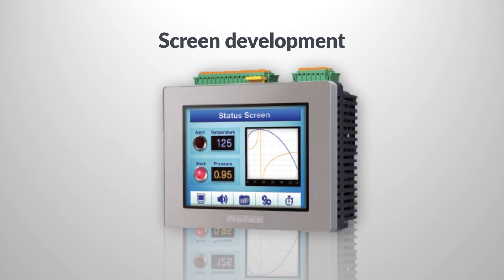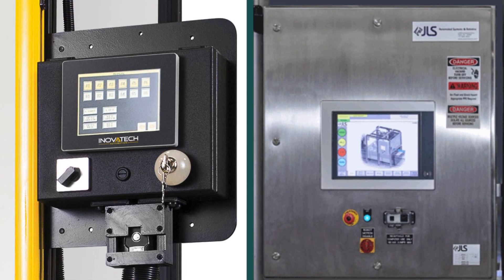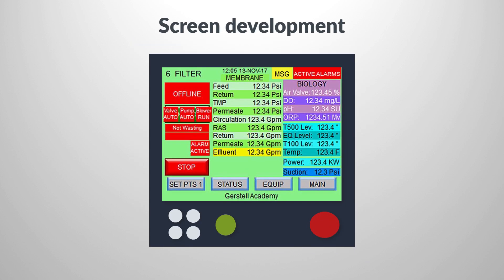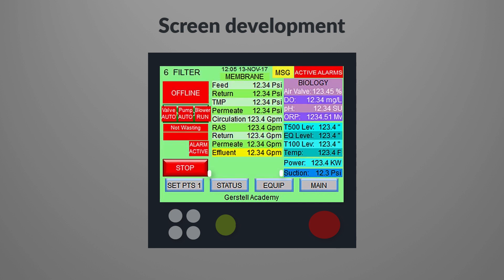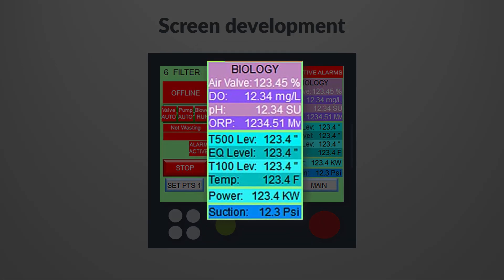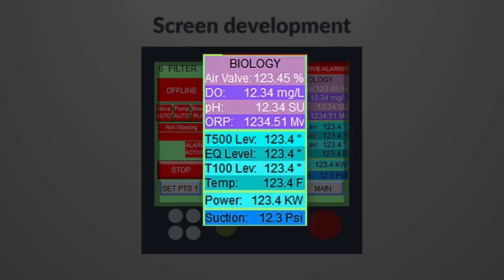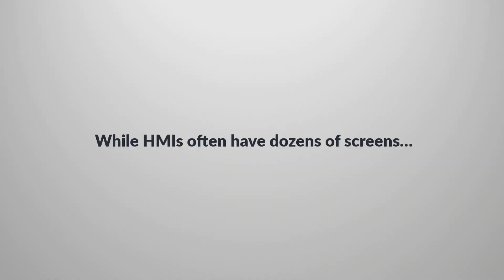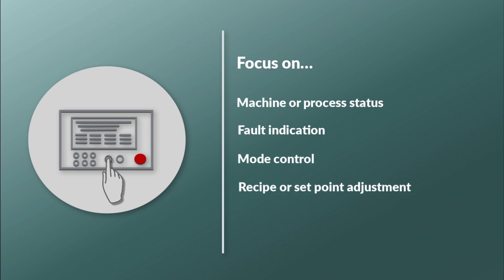When it comes to developing graphics screens, there are many basic HMI design techniques that should be followed. But an operator interface is more than just a pretty picture — that pretty picture may have too much information. Be sure to create logical zones on an HMI screen and limit these zones to five or seven. Create columns or put boxes around each zone and include clear, large text to identify it. Limiting the number of colors used and simplifying the navigation can also make for a better HMI. While HMIs have dozens of screens, focus on machine or process status, fault indication, mode control, recipe or set point adjustment, and manual functions.